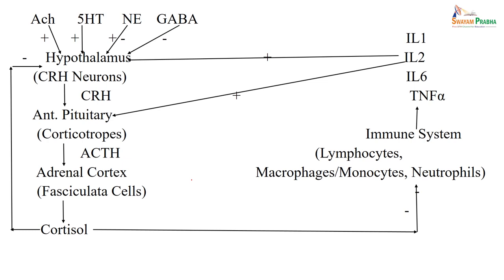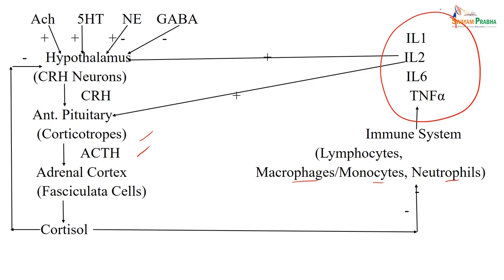It is also mediated with other neurotransmitters — acetylcholine, 5-HT, norepinephrine, or GABA — because from the hypothalamus, corticotropin neurons signal the anterior pituitary to release ACTH (adrenocorticotropic hormone), which stimulates the adrenal cortex fasciculata to release cortisol. Once cortisol is released, it suppresses macrophages, monocytes, neutrophils — all WBCs — along with cytokines like TNF-alpha, interleukin-6, interleukin-2, and interleukin-1. That is how it correlates with neurotransmitters and affects CNS function, anti-allergy, immunosuppression, and the immune system.